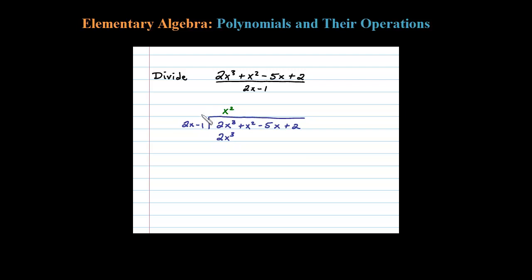But here it's a binomial, so you have to distribute and multiply x squared times negative 1 as well, so minus x squared. And just as in the regular division algorithm, then we're going to have to subtract.